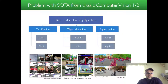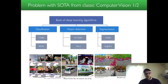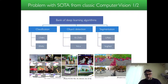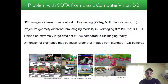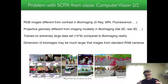The problem is that these state-of-the-art images for classic computer vision include typical natural images which may have nothing to do with your own imaging type — such as cells if you work in microscopy, or plant leaves in plant phenotyping. RGB images used in these datasets may have very different contrast from what you have in bioimaging — X-ray, MRI, fluorescence, depth imaging, and so on. These images also use projective geometry, which is very different from flat 2D or real 3D bioimages.